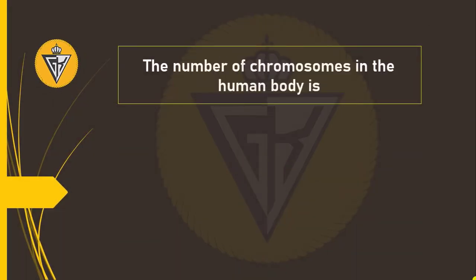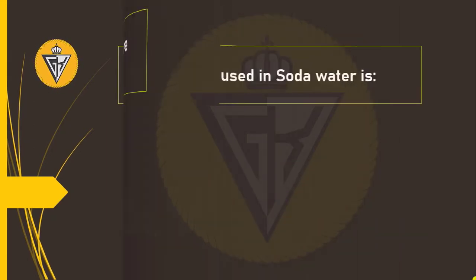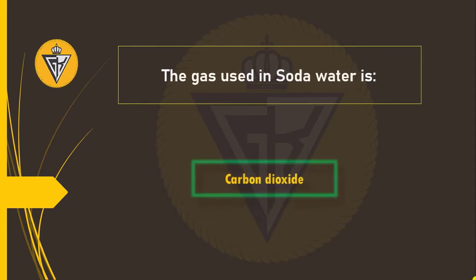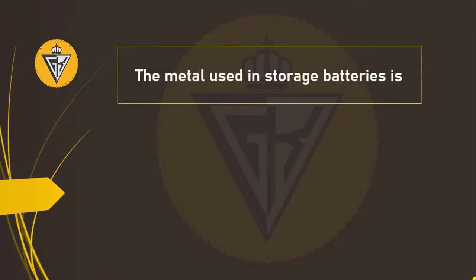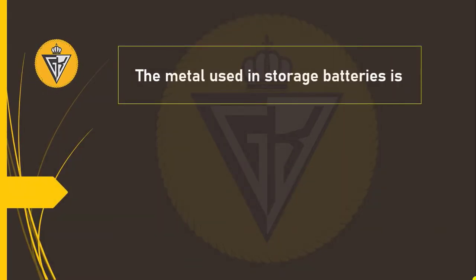The number of chromosomes in the human body is 46. The gas used in soda water is carbon dioxide. The metal used in storage batteries is lead.